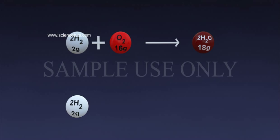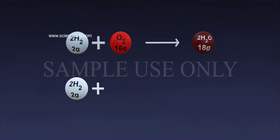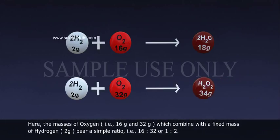Hydrogen, 2 grams, plus oxygen, 32 grams, gives hydrogen peroxide, 34 grams. Here, the masses of oxygen, that is 16 gram and 32 gram, which combine with a fixed mass of hydrogen, 2 gram, bear a simple ratio, that is 16 is to 32, or 1 is to 2.